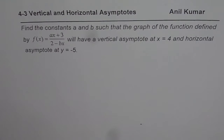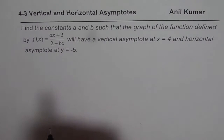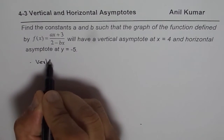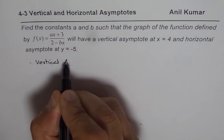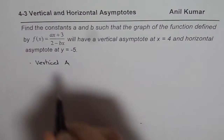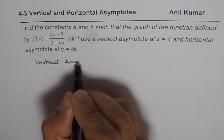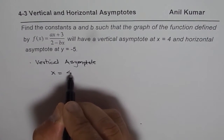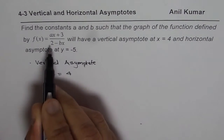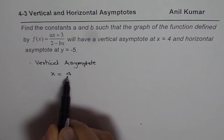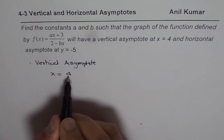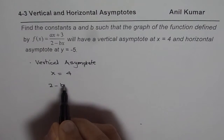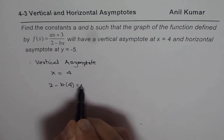Here are two simple steps to solve this. The first step is to find the vertical asymptote. The vertical asymptote is given to us at x equals 4, which means the denominator will be 0 for x equals 4. So we substitute 4 for x in the denominator: 2 minus b times 4 should equal 0.